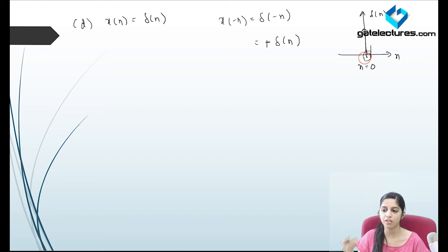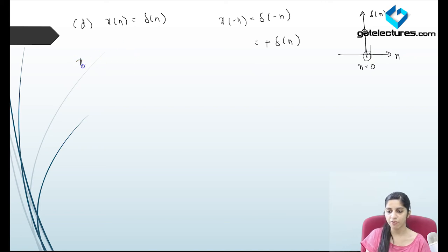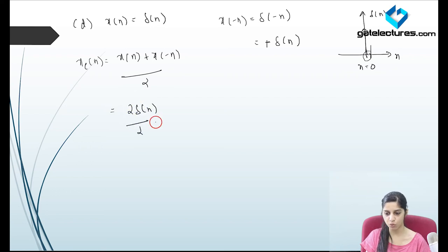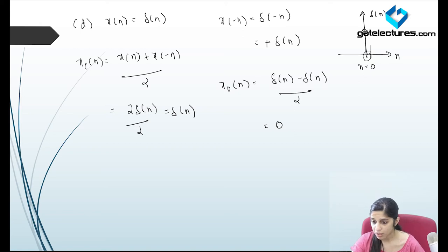Since delta(n) occurs only for n equals 0, when I add x(n) and x(minus n) and divide by 2, I am adding 2*delta(n) and dividing by 2, which makes the even part delta(n). This function consists of an even signal which occurs for only one n value. Similarly the odd part will be zero.